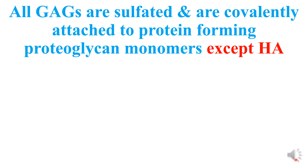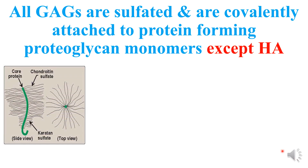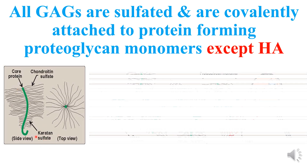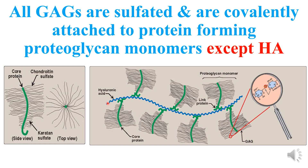All sulfated GAGs are covalently attached to protein, forming proteoglycan monomers. A monomer of proteoglycan has a core protein to which various GAGs are attached — for example, chondroitin sulfate and keratan sulfate — giving it the appearance of a bottle brush. All these monomeric proteoglycans are attached to one large hyaluronic acid molecule, forming a large proteoglycan aggregate.